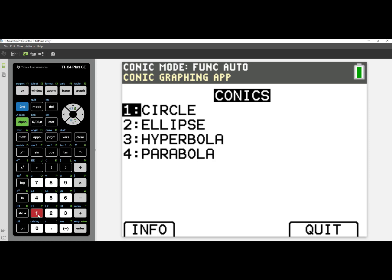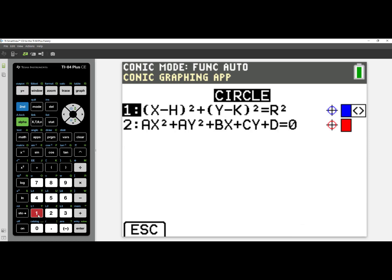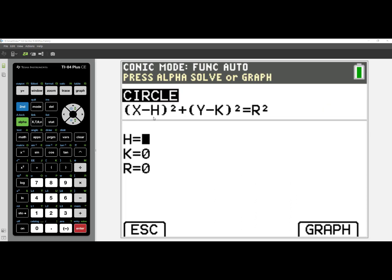I will select number one, Circle. I see the Center Radius form and the Standard form. On the far right-hand side, you have the ability to change the color by pressing the right or left arrows. But if I select number one for the Center Radius form, I get to choose the H, K, and R values down below.